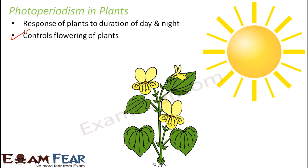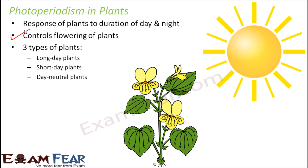For all plants which produce flowers, when that plant produces flowers is strongly dependent on how many hours it has been exposed to light. Based on the number of hours of exposure to light needed by a plant, they are categorized into three types: long day plants, short day plants, and day neutral plants. This classification is based on their requirement of light exposure duration needed in order to flower.